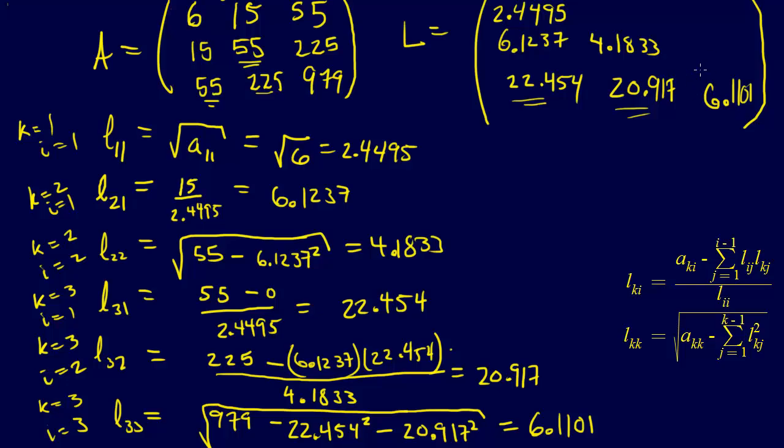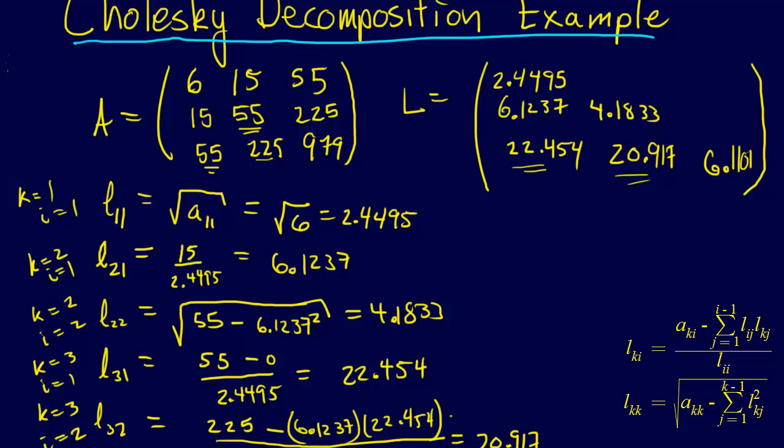So there's an example of a Cholesky decomposition. And that is our sort of like our matrix square root.